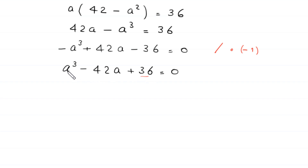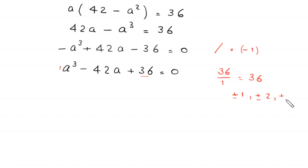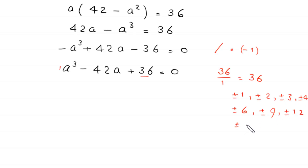This is a cubic equation. Dividing 36 by the leading coefficient 1 gives 36. The factors of 36 are plus or minus 1, plus or minus 2, plus or minus 3, plus or minus 4, plus or minus 6, plus or minus 9, plus or minus 12, plus or minus 18, and plus or minus 36.